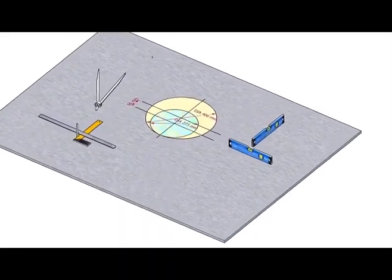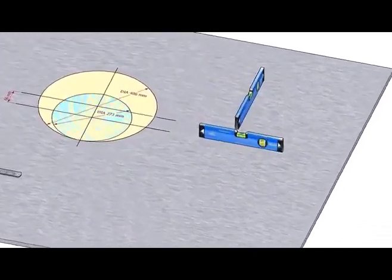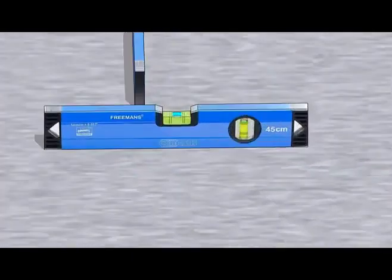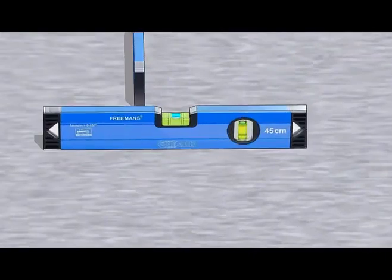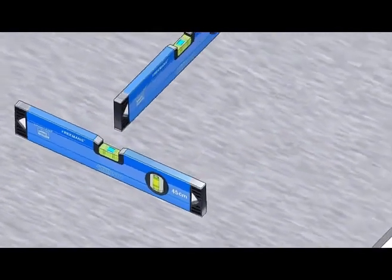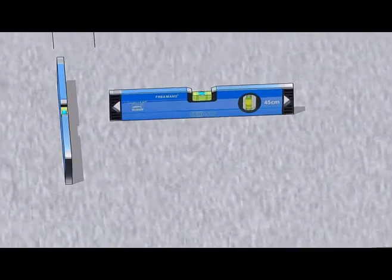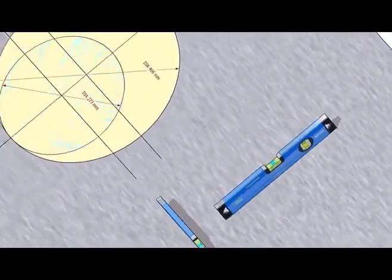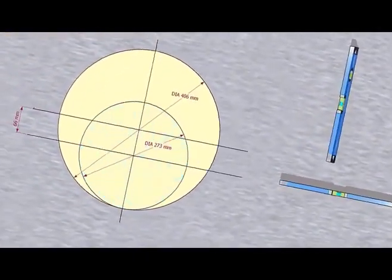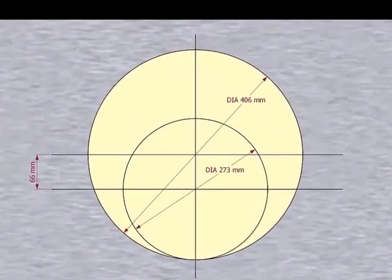Let us mark the centerline. Check the levelness of the platform. Please remember that our reducer size is 16 inch into 10 inch.